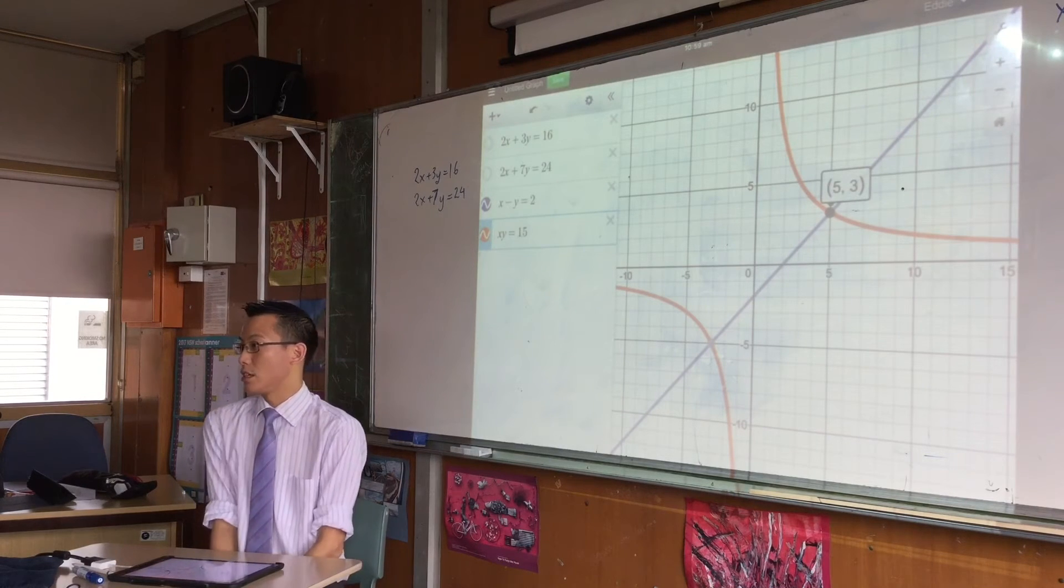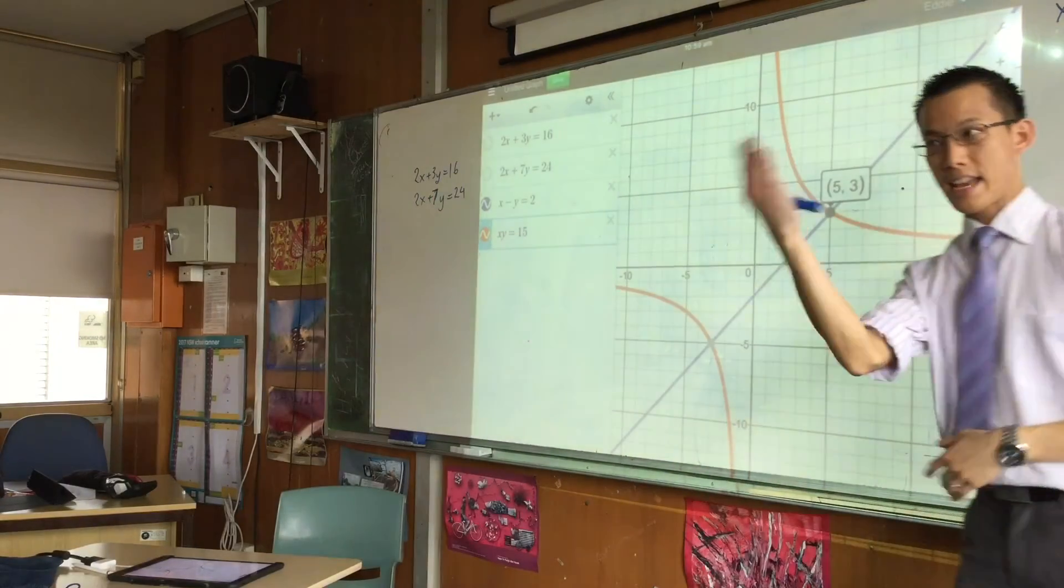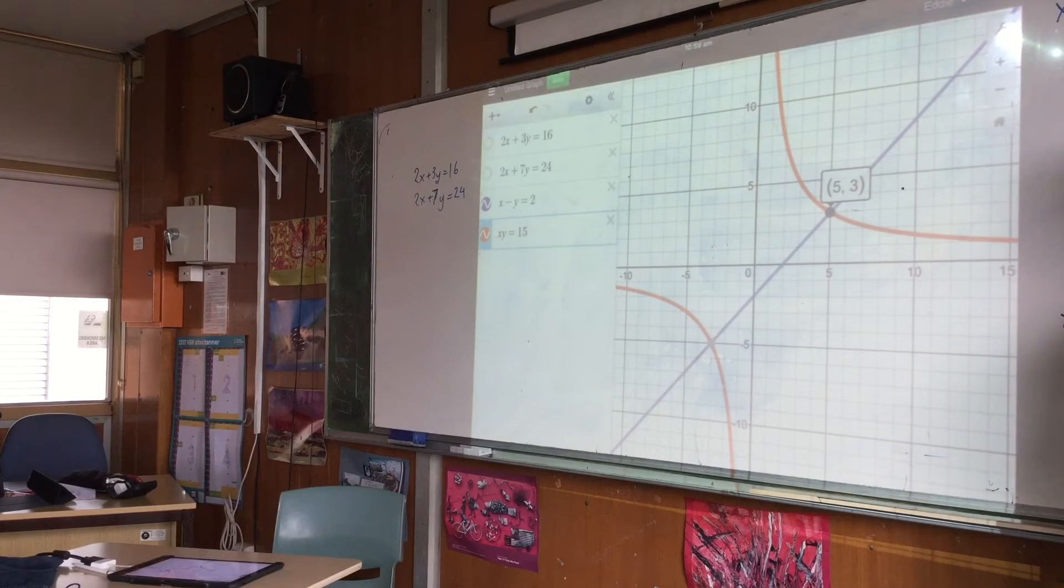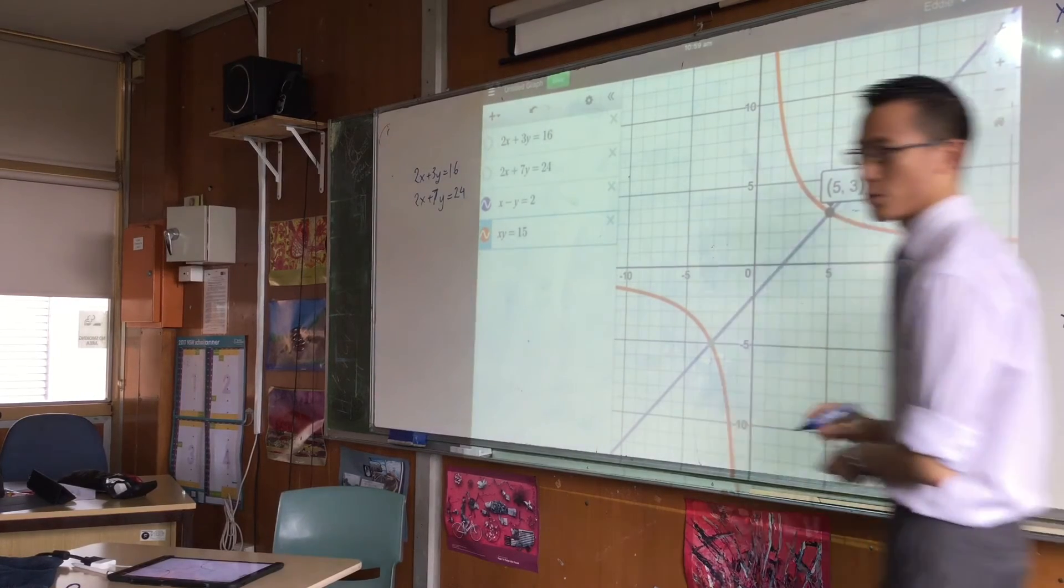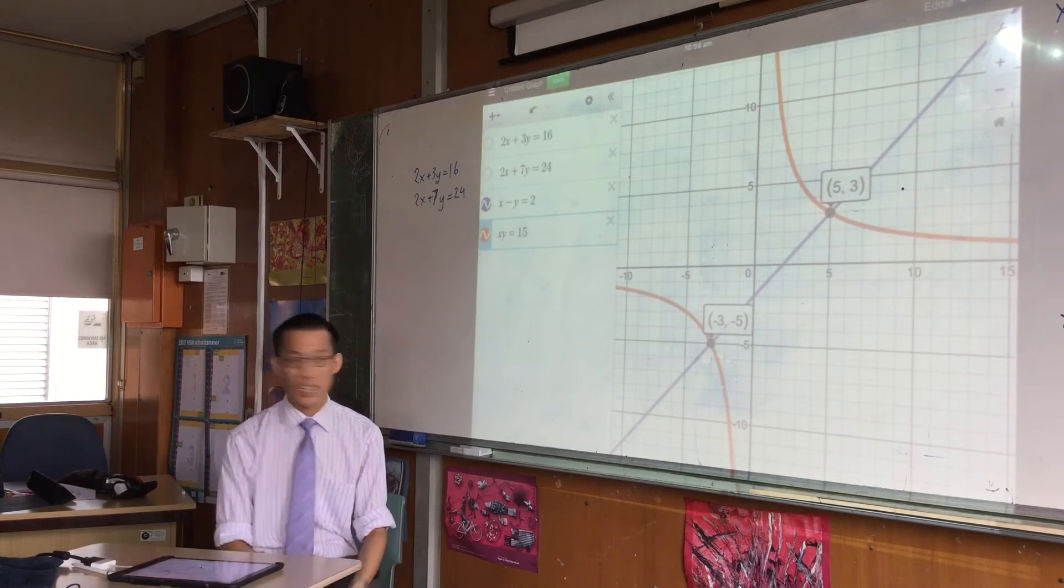So that one over there, 5 comma 3, that's an x value and a y value. So x equals 5, y equals 3, that's one of the solutions. If you come back down to the bottom left hand corner, you can do the same thing.